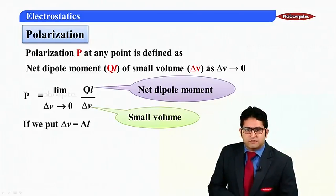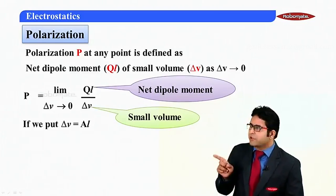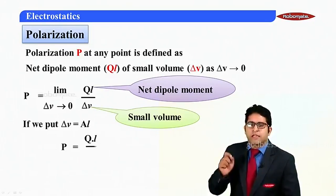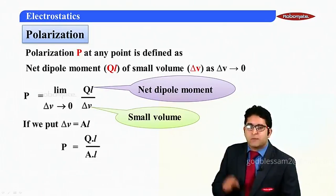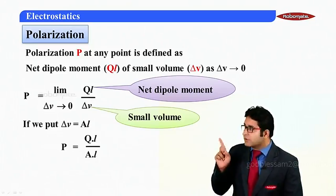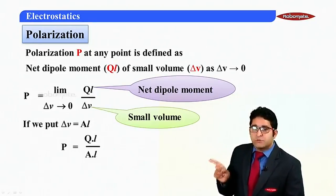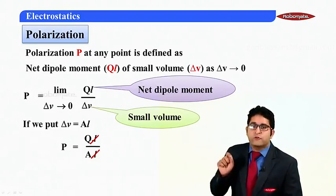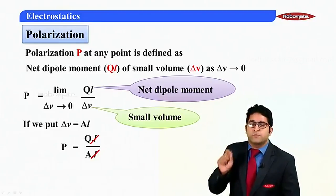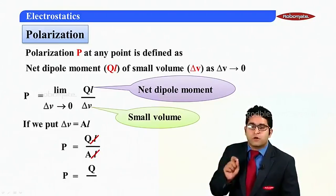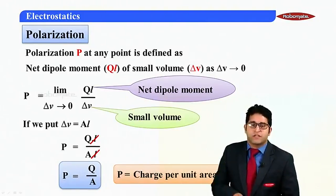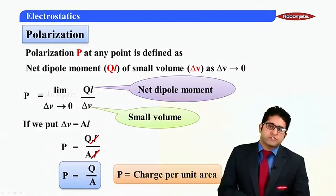Since volume can be written as area into length, substituting gives P = Ql / (Area × Length). Cancelling L from numerator and denominator, we are left with P = Q / A, which is charge per unit area.